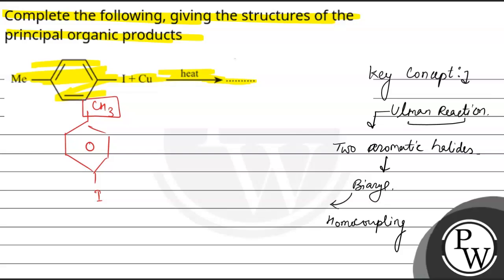If this is a CH3 unit and iodine, when two molecules react in the presence of copper and heat, what forms? Biphenyl forms like this, because the iodine centers join together.